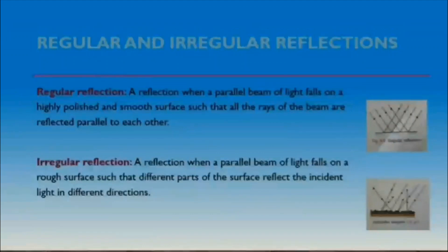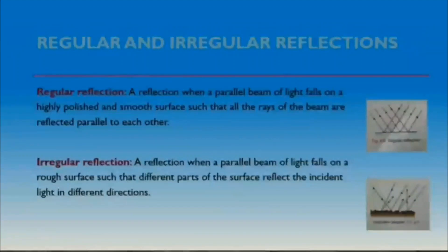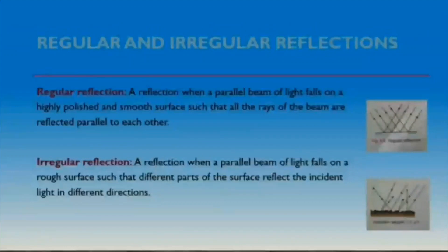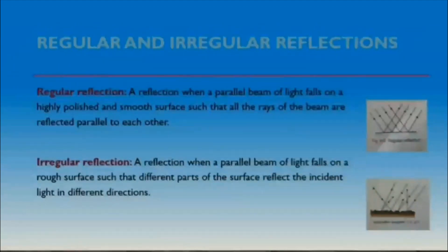Now, we will study about the two types of reflection of light — regular and irregular reflections. Regular reflection can be defined as when a parallel beam of light falls on a highly polished and smooth surface such that all the rays of the beam are reflected parallel to each other. Such a reflection is known as regular or specular reflection. Examples of regular reflection can be observed in a plain mirror, still water, and highly polished floor.